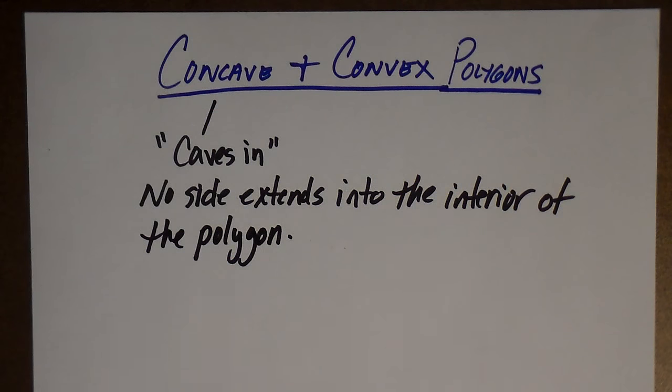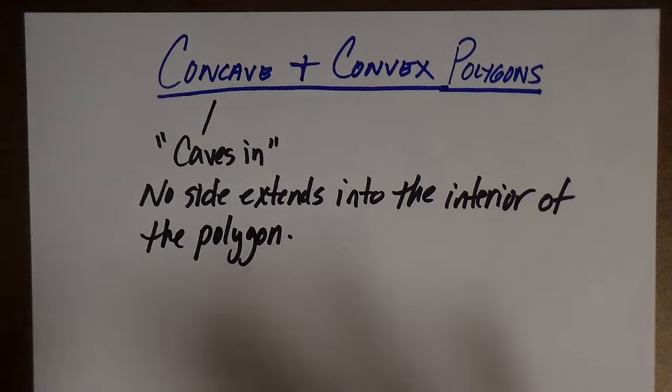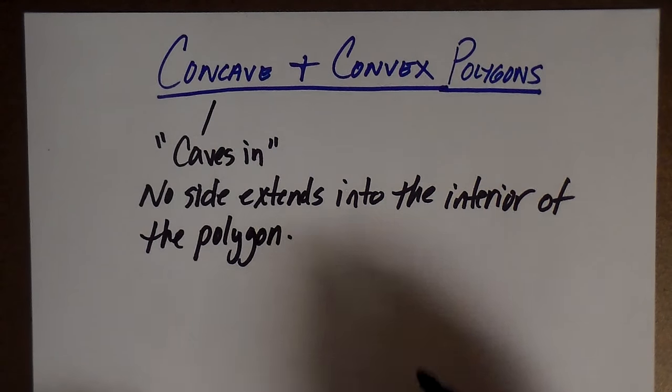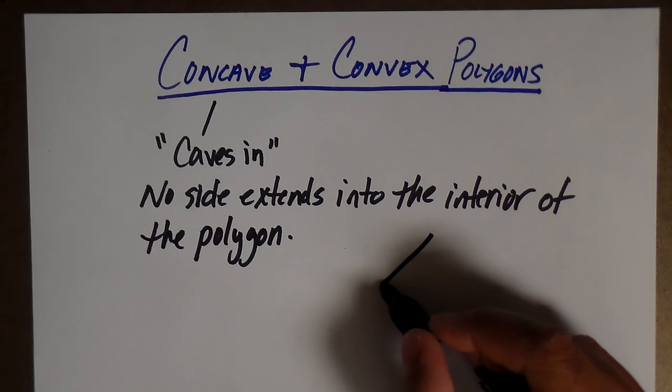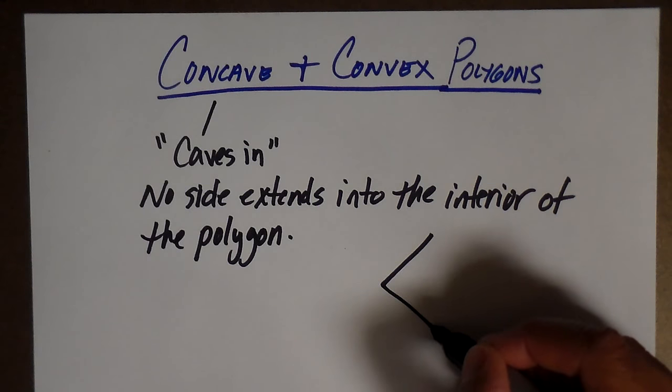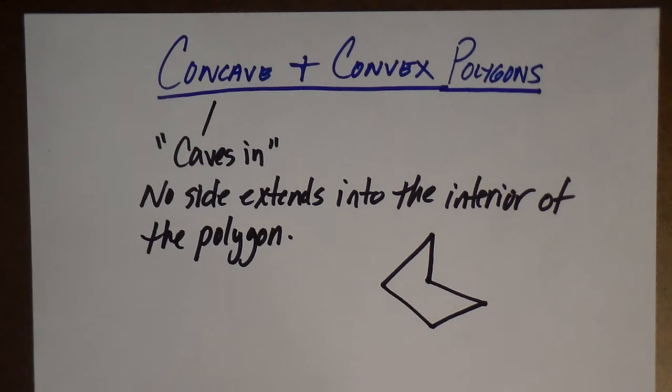What that means is a concave polygon, you would be able to actually extend one of the sides. If you were to extend it out, it would go to the interior of the polygon. So for example, let's look at this polygon here. Okay, this is a polygon.